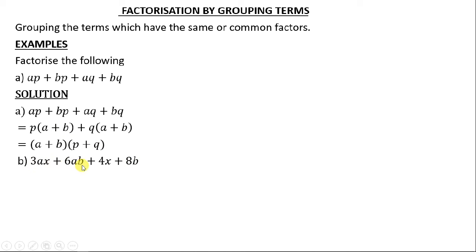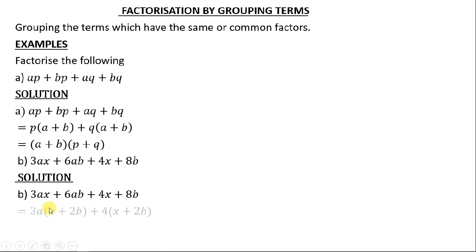Part b: we have 3ax + 6ab + 4x + 8b. What is common between 3 and 6? It's 3, and there's also an a which is common, so we factorize out 3a. What remains inside the bracket is x. What do we multiply with 3 to get 6? It's 2, and b remains — so we have 3a(x + 2b).